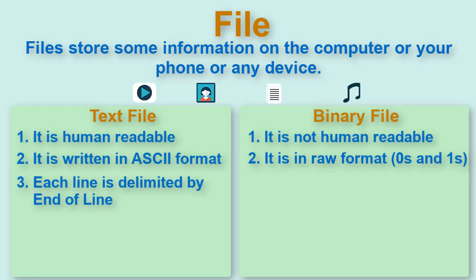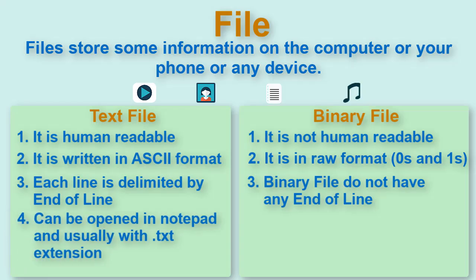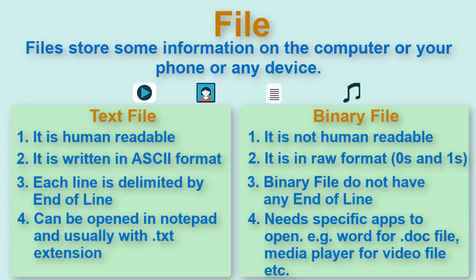In text file, each line is delimited by end of line whereas in binary file we do not have any end of line. Text files can be opened in notepad and usually have .txt extension. Binary files need some specific app to open it like word to open .doc file, media player for video, audio files, etc.